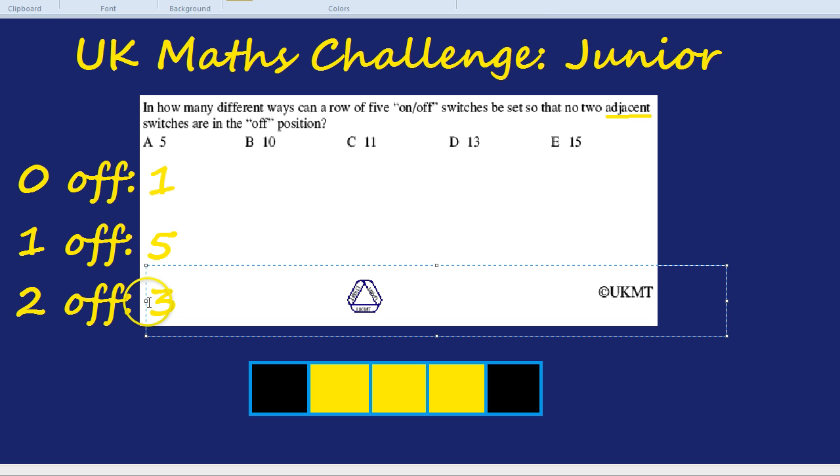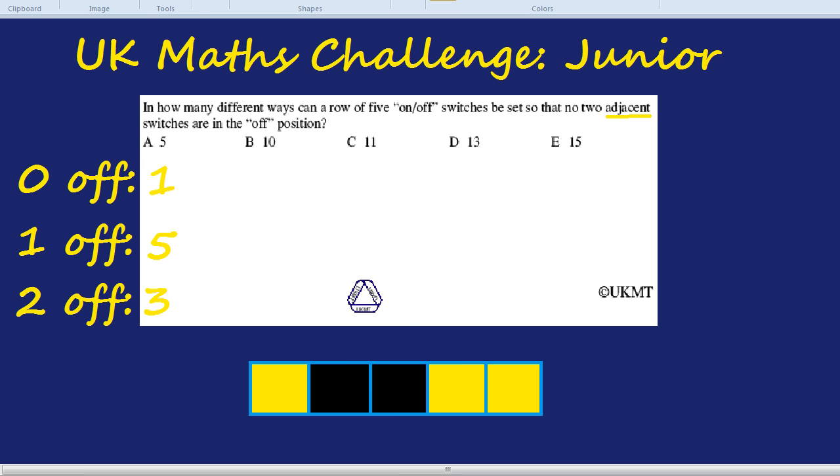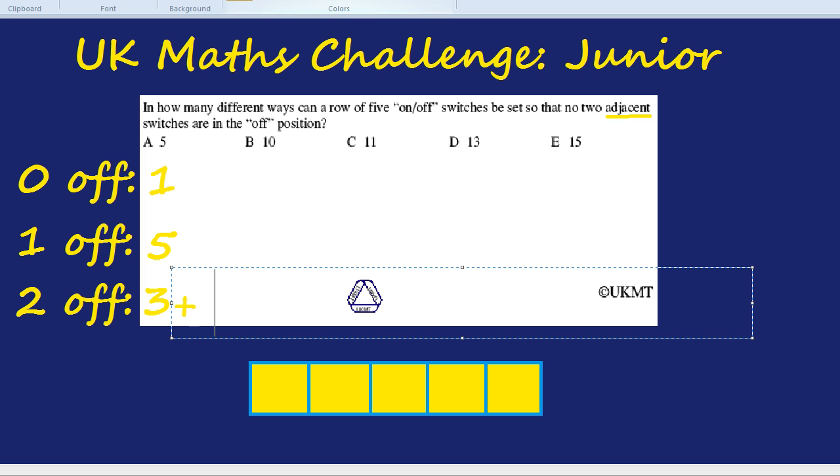We're being ultra-systematic here, which is really good. Let's get rid of these and then note it down. Now, instead of the first switch being off, we've done all the different combinations with the first switch being off. Let's do the second switch being off. Can the third switch be off? No, because that would be adjacent switches being off. But the fourth one could be. So that's one more combination. And the fifth one could be. That's another combination. So that's two more combinations if the second switch is off. Hunky Dory.